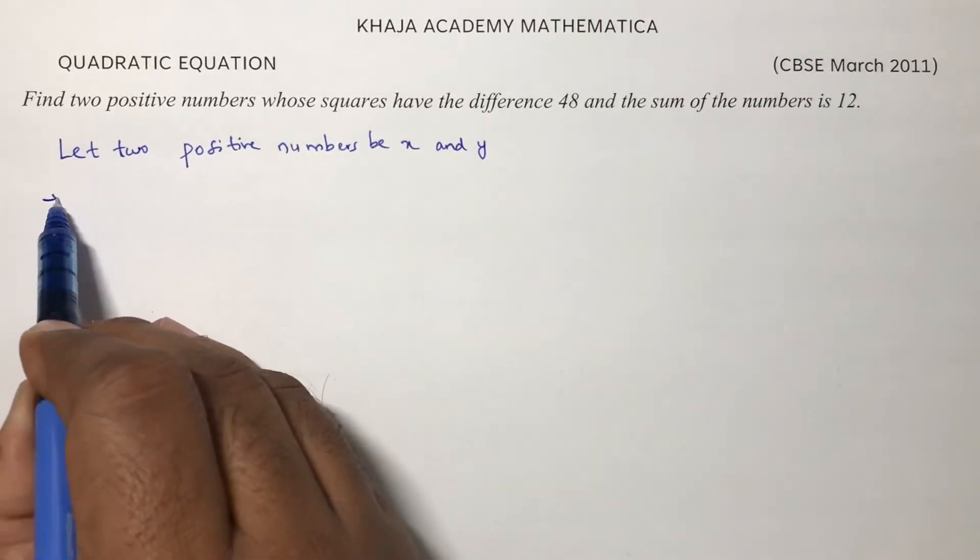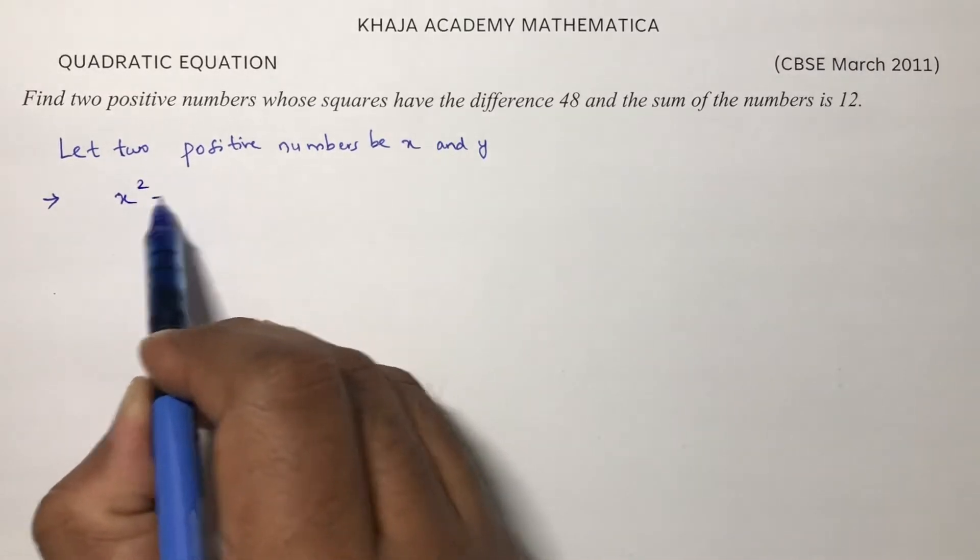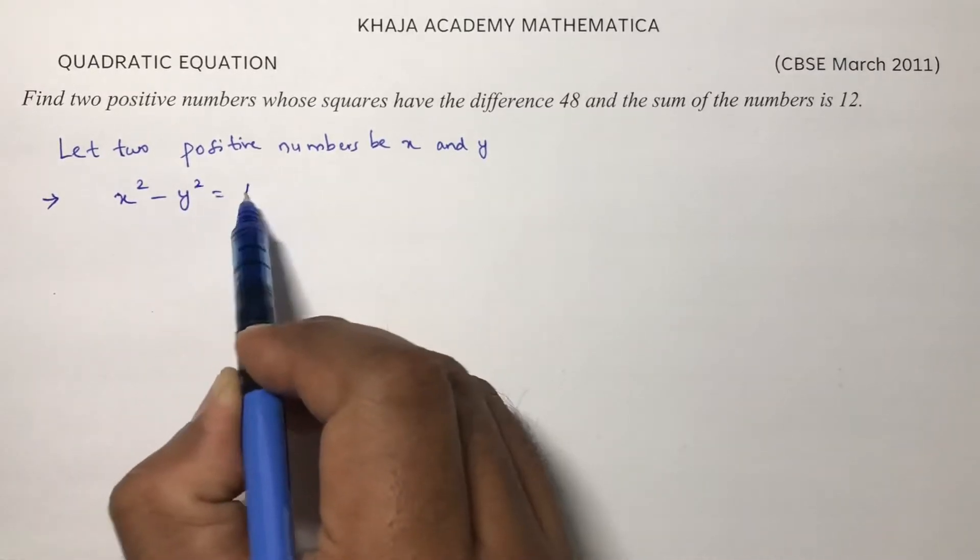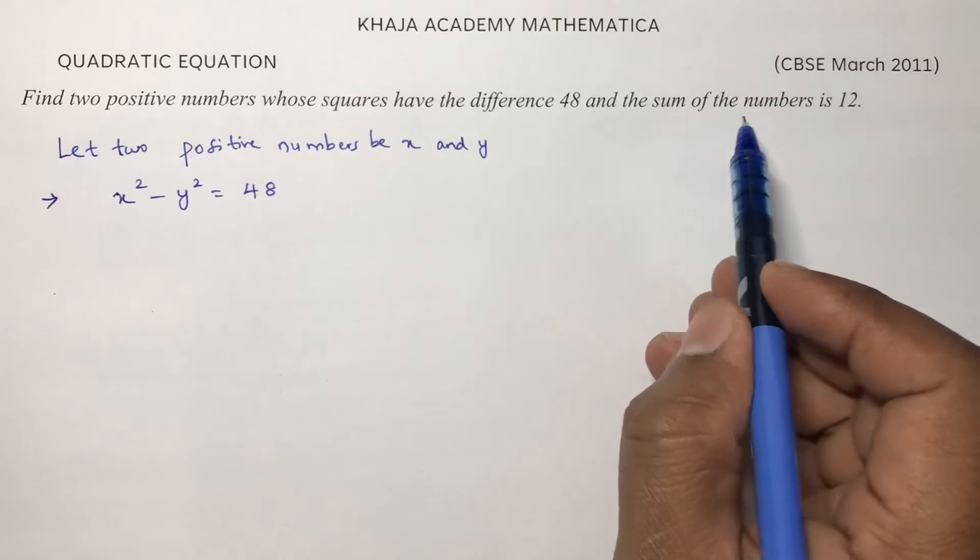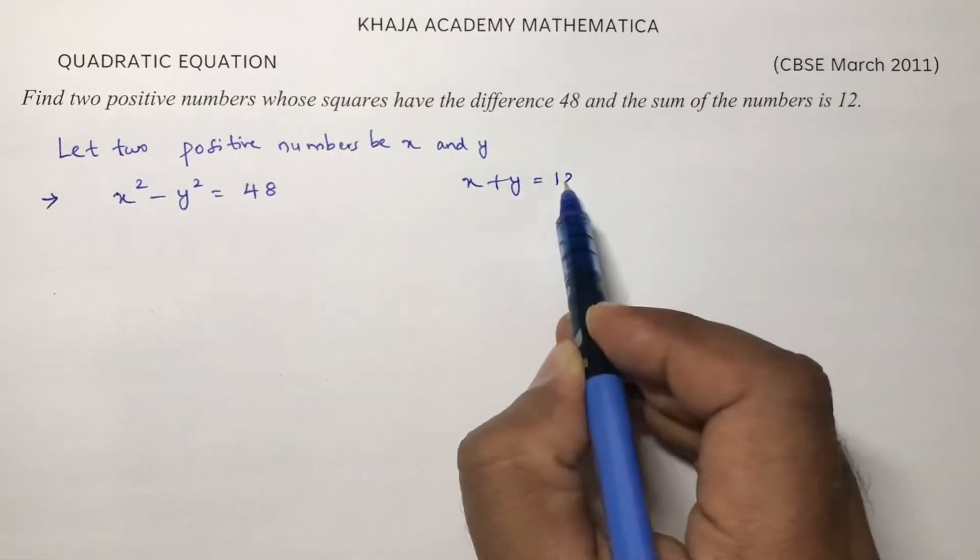So according to the given condition, squares of two numbers x² - y² = 48, and sum of the numbers is 12, so x + y = 12.